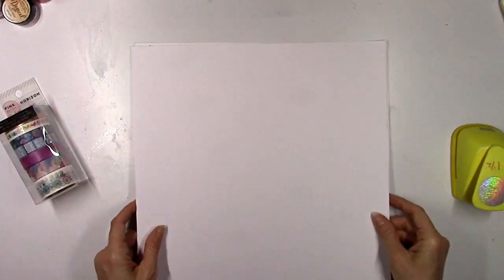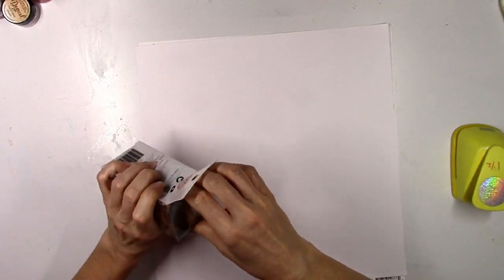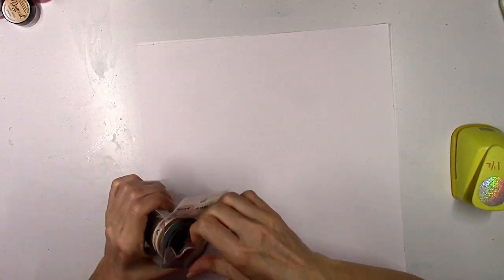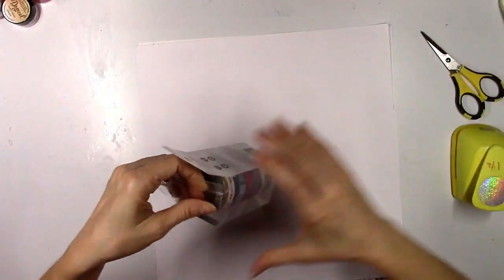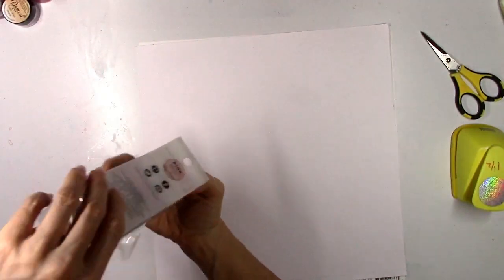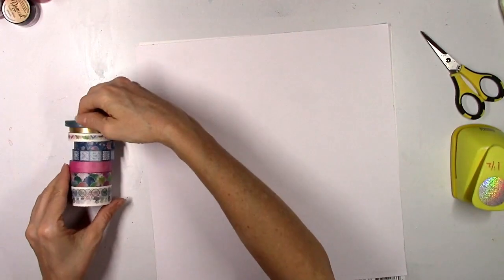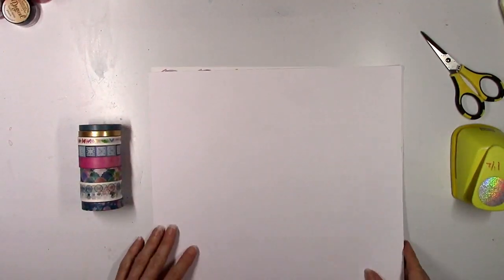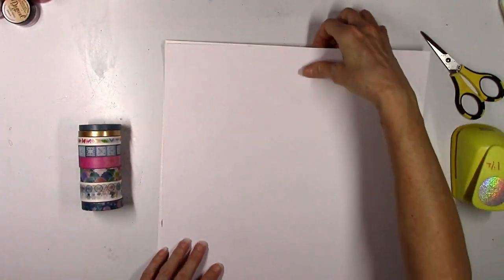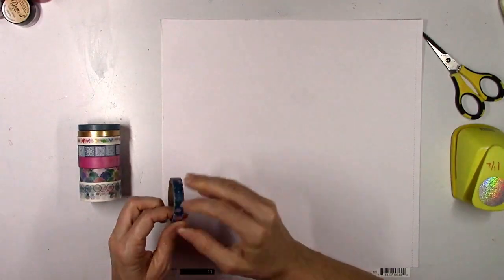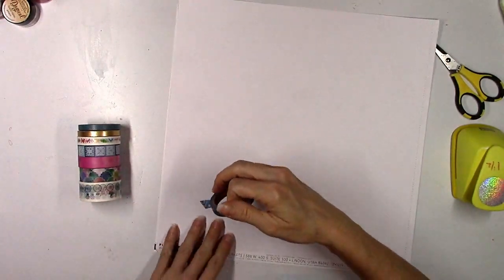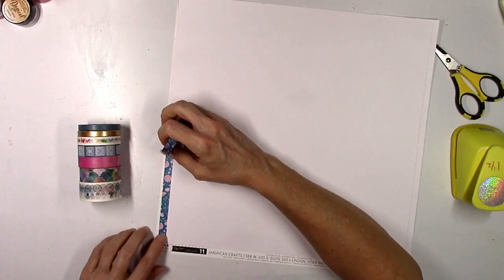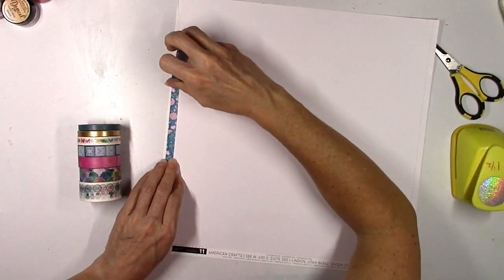But first I'm going to work on the washi tape. This is just one way that you can use several washi tapes on one layout. The possibilities are endless. I haven't used washi tape in a while. I go through stages where I use it a lot and then I forget about it. But I want to use all of these rolls. What I want to do is cover a lot of this white textured cardstock with strips of washi tape, and then I'm going to punch circles out of it.